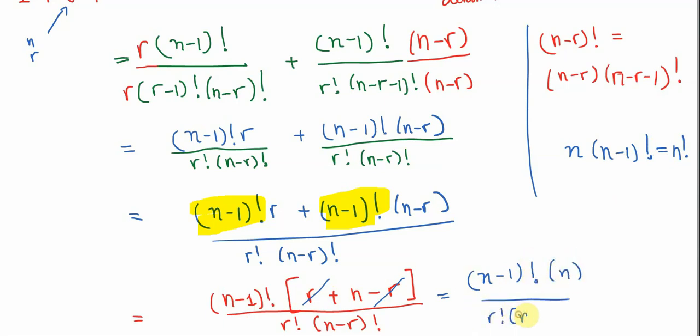all of this over r factorial, n minus r factorial. And you see, n times n minus one factorial is just n factorial, which is exactly what we're aiming for.